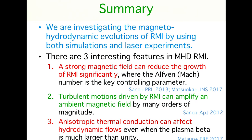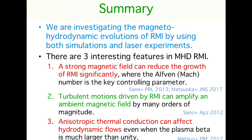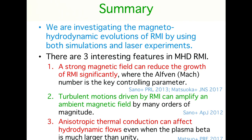In summary, we are investigating the MHD evolution of Richtmyer-Meshkov instability using simulations and laser experiments. There are three interesting features of MHD-RMI: a strong magnetic field can reduce the growth of the instability, with the Alfvén Mach number being very important; turbulent motion driven by the instability can amplify the magnetic field; and anisotropic thermal conduction can affect the hydrodynamic flow even when the plasma beta is much larger than unity. Thank you very much.